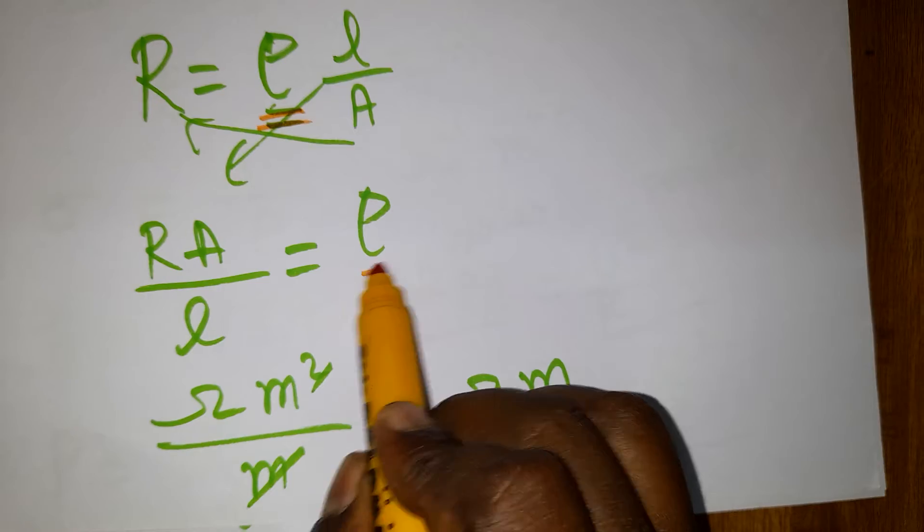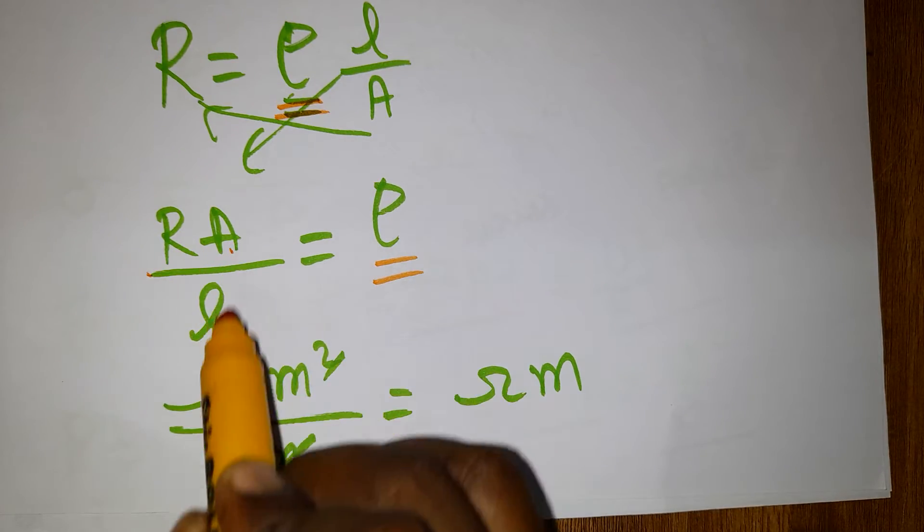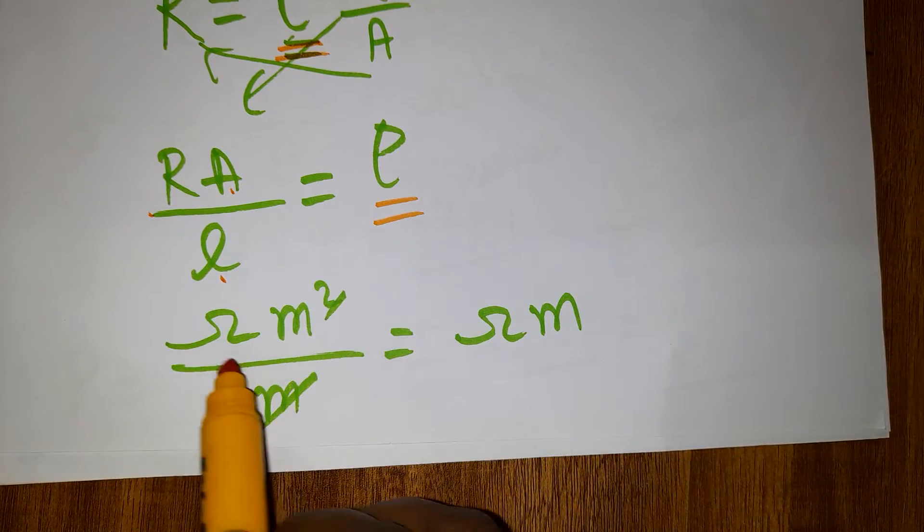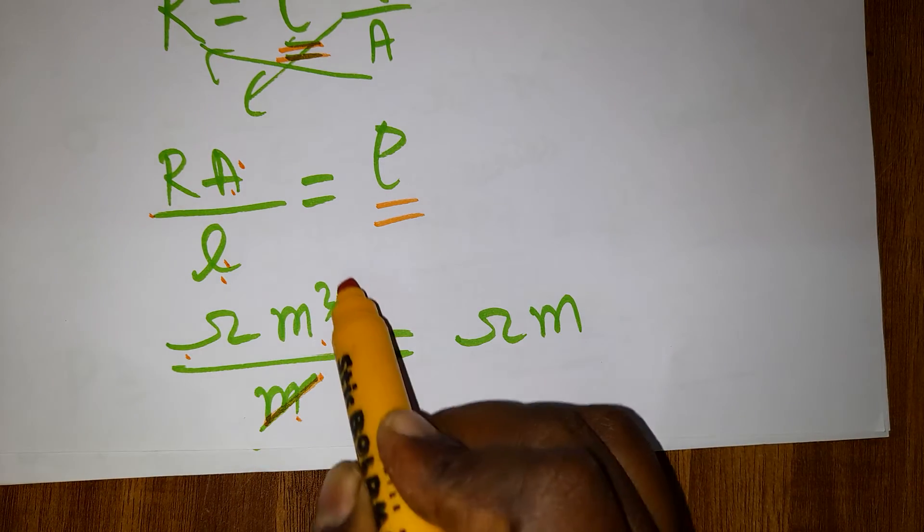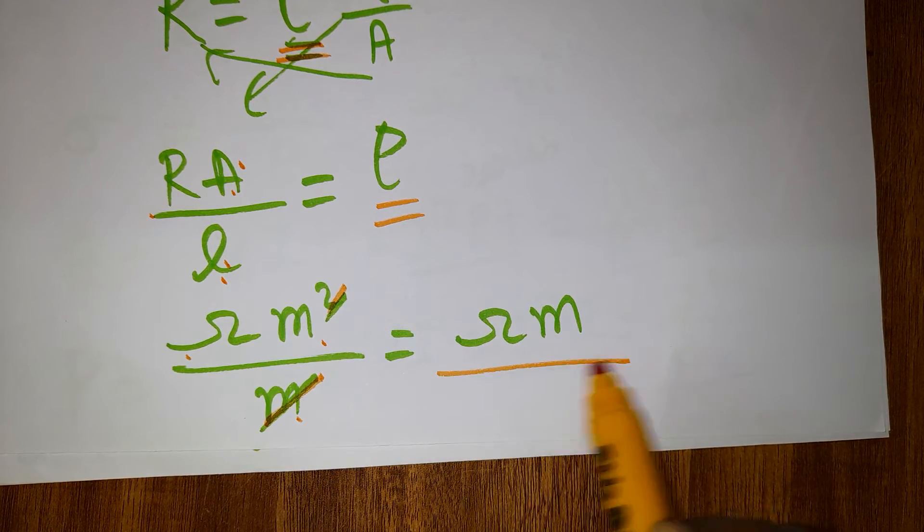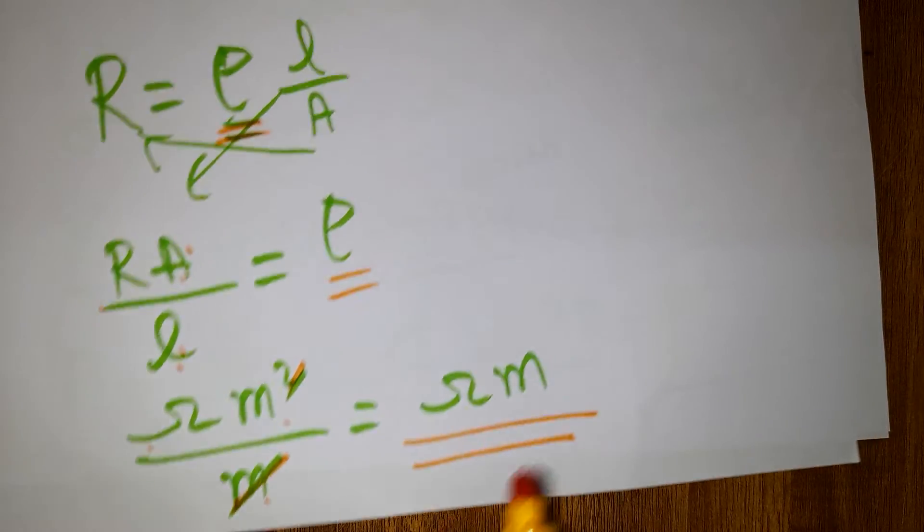Resistivity equals resistance times area divided by length. The unit of resistance is ohms, area is meter squared, length is meters. Meter squared cancels, giving ohm-meter as the unit of resistivity.